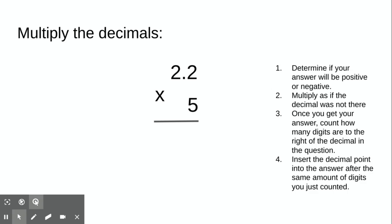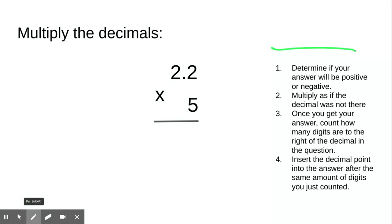We have four steps when we multiply decimals together. Step one: determine if our answer will be positive or negative. Looking at our first example, the signs are the same — both positive numbers — so our answer will also be positive.